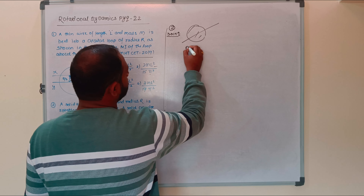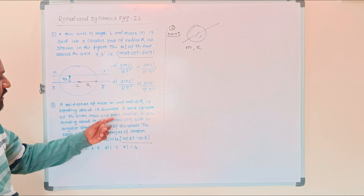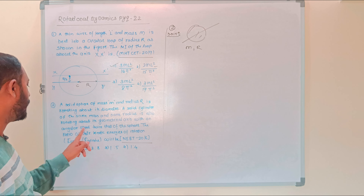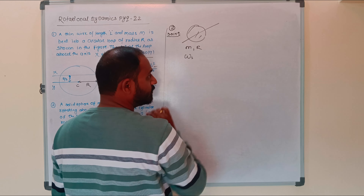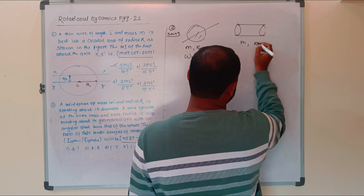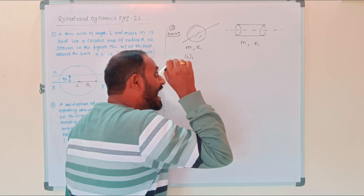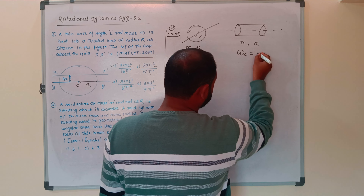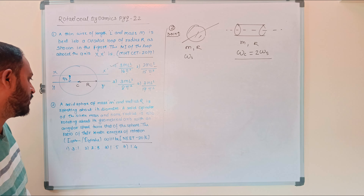A solid cylinder of the same mass and same radius is also rotating about its geometrical axis. The angular speed of the solid cylinder is equal to two times the angular speed of the solid sphere. This is the given condition.